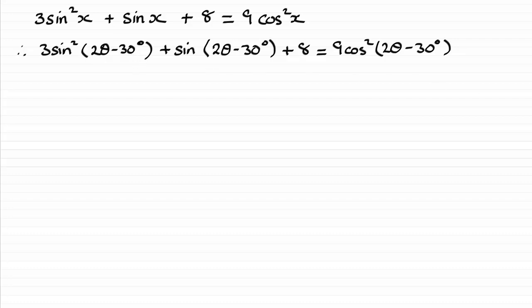So, if we look at that part then, if x equals 2θ minus 30 degrees, then theta clearly, when you rearrange it, is going to be x plus 30 all divided by 2.